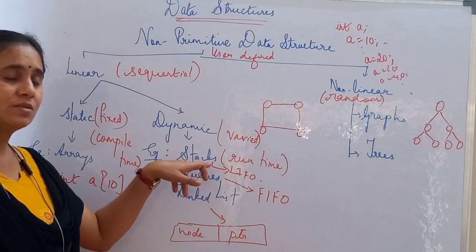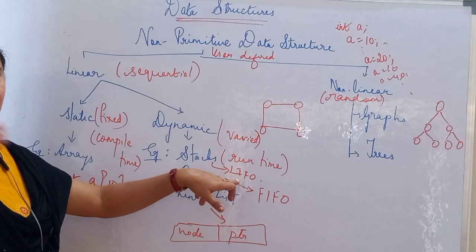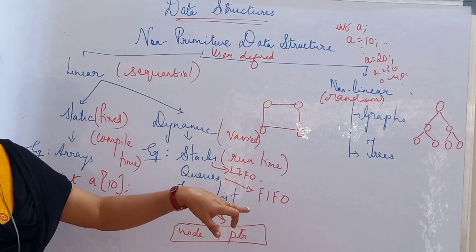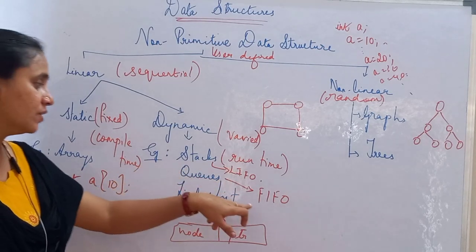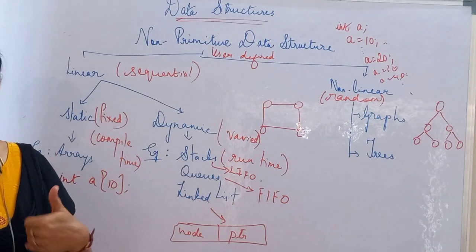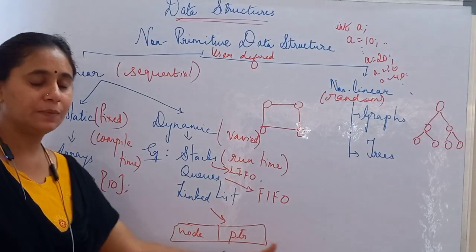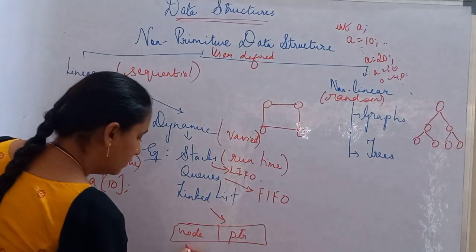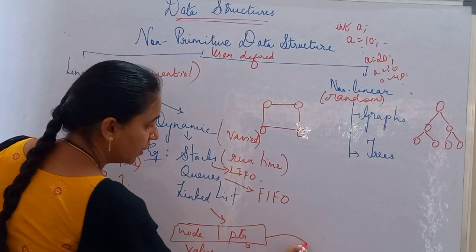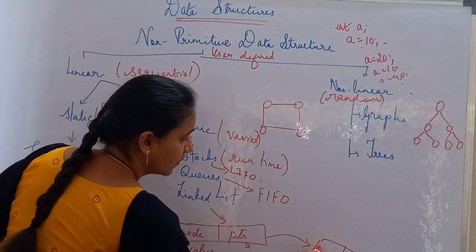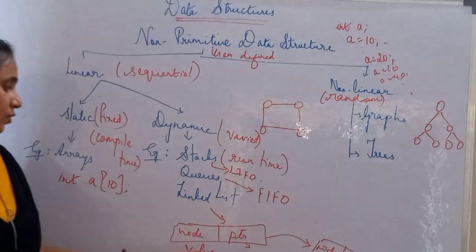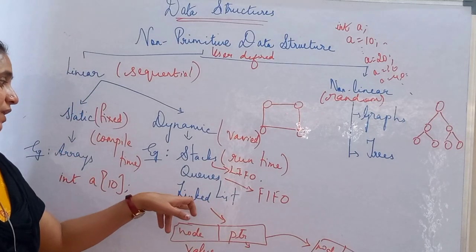Stack is a dynamic representation. Once values are stored, we can retrieve from the topmost area. In a queue, the first value stored is the first to be removed or deleted. In a linked list, we represent using nodes and pointers — the node stores the value and the pointer points to the next memory location. This is the sequential representation of a linked list.